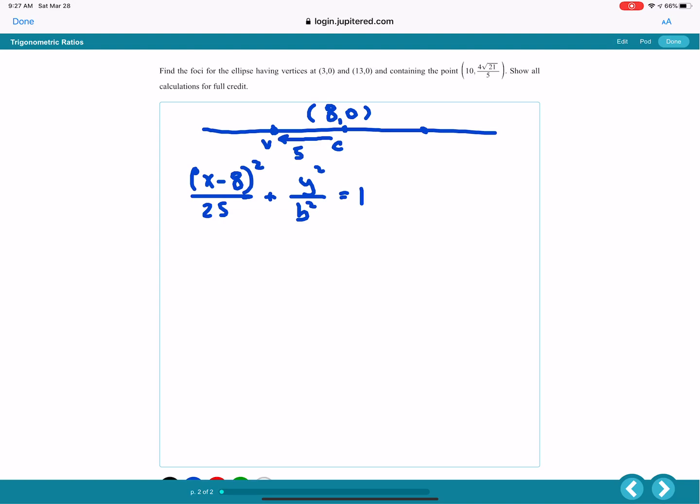So I've got this information here. I'll let you think about that for a second. Now we're going to take the point 10 comma 4 root 21 over 5, and substitute that in for x and y. So substituting in the 10 for the x gives me 2, because 10 minus 8 is 2, squared over 25, plus,